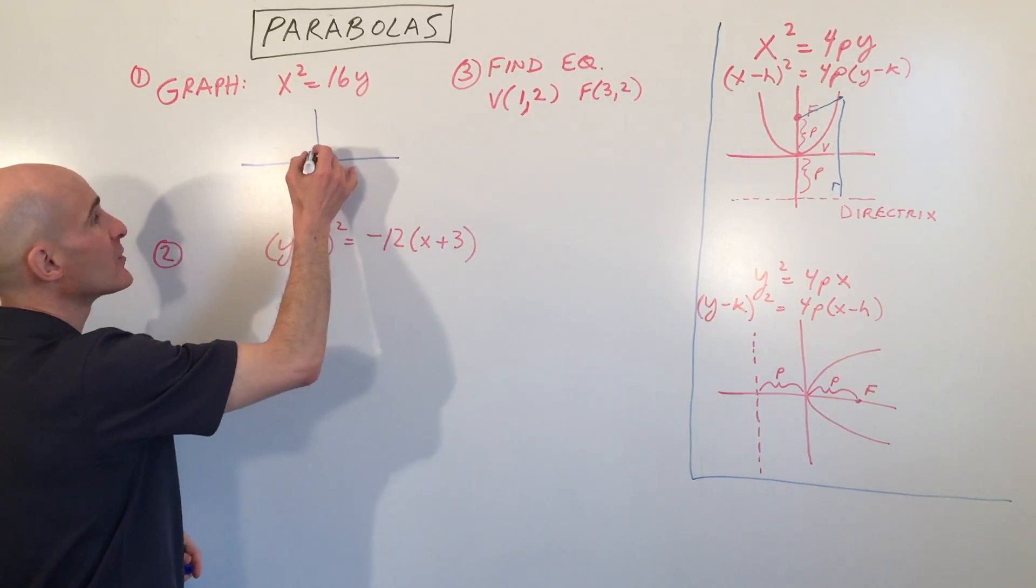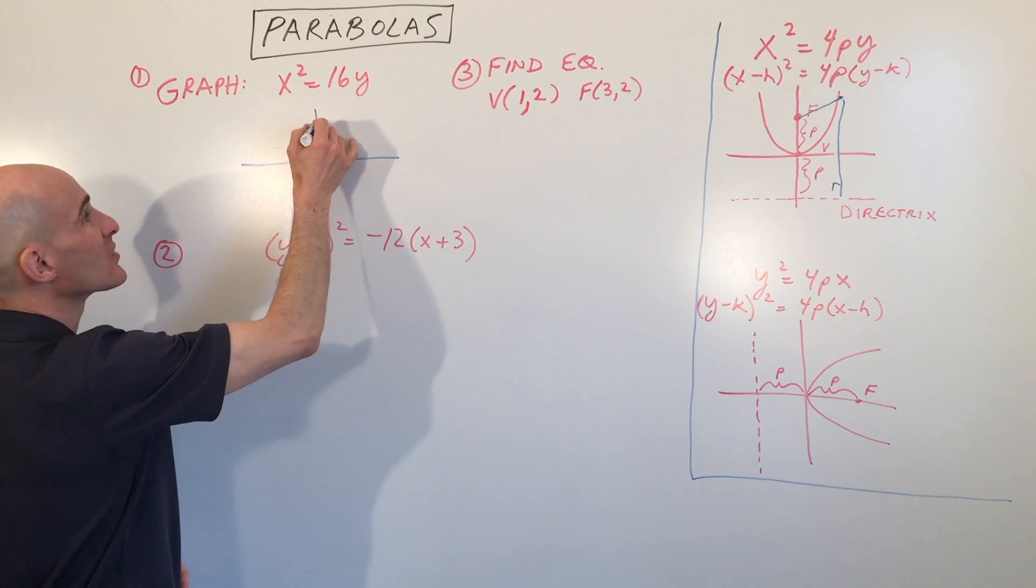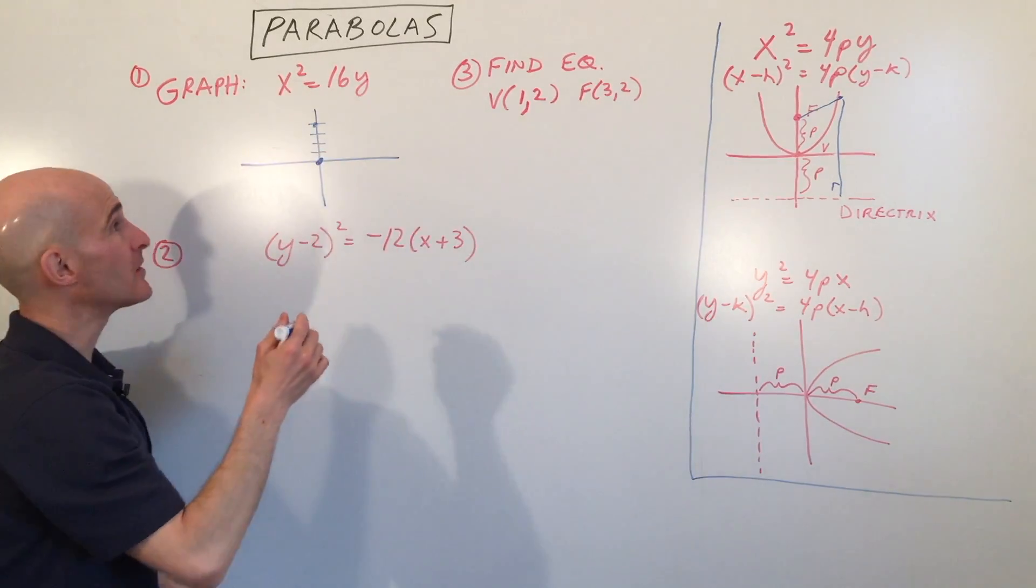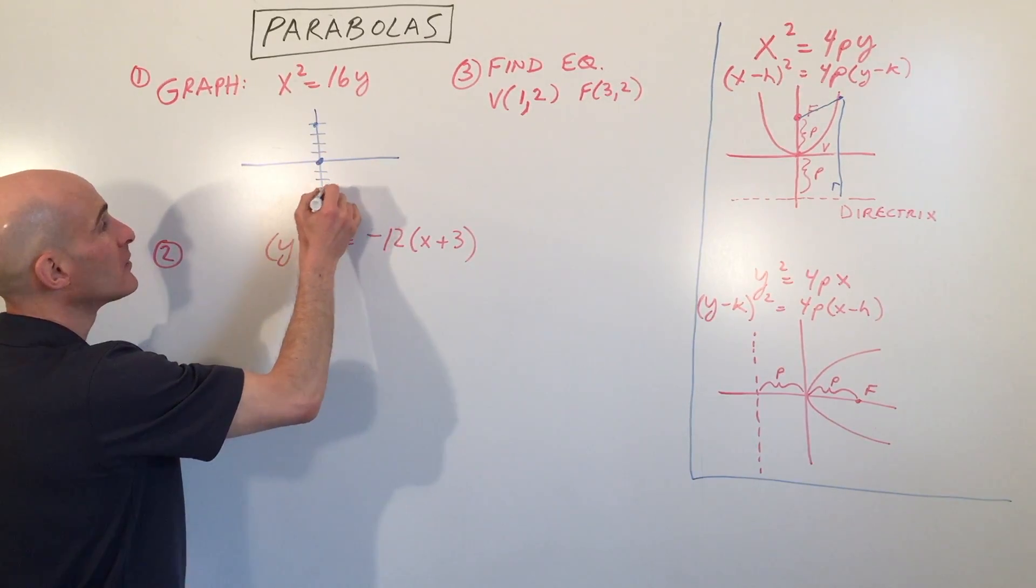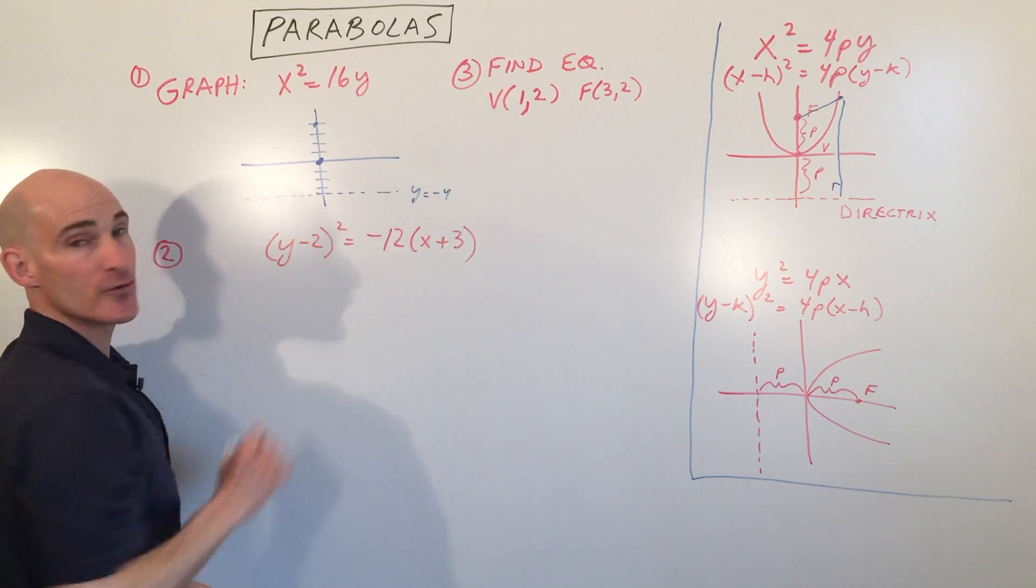If I draw a graph here, the vertex is at the origin because it hasn't been shifted. And the p value is 4, so I'm going to go up 1, 2, 3, 4. So that's where the focus is because 16 equals 4p. I just set those equal and solve for p. And I'm going to go down 4, and that gives us the directrix right there at y = -4.